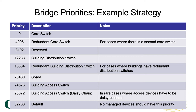One thing about spanning tree is the bridge priorities are not arbitrary — they are all multiples of 4096 (4k, k being 1024). They are set inside the standards, and because of the size of the field you can only have 32768 as the largest possible bridge priority.